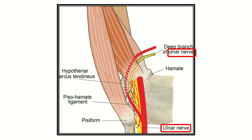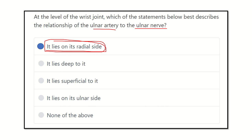So the ulnar artery is protected by the ulnar nerve. If we remember this, it will be easy: the ulnar nerve is on the inner or medial side protecting the ulnar artery, not on the outer side. So our answer is that the ulnar artery lies on the radial side compared to the ulnar nerve at the wrist joint.